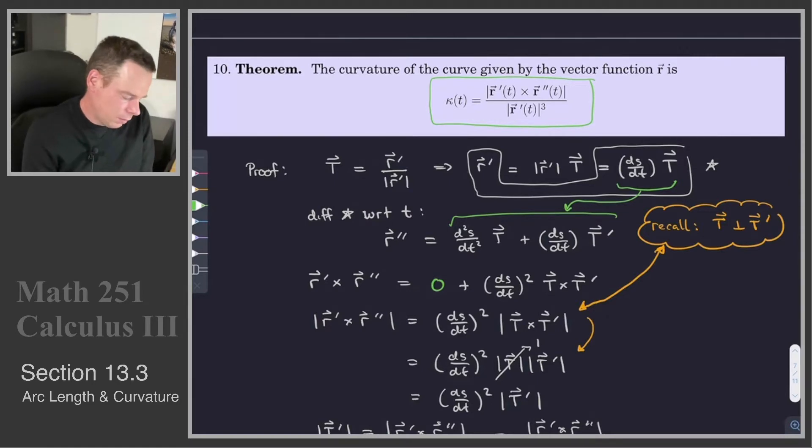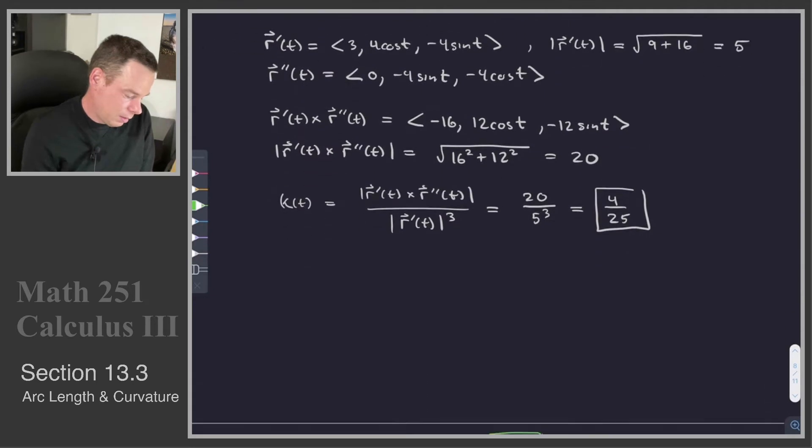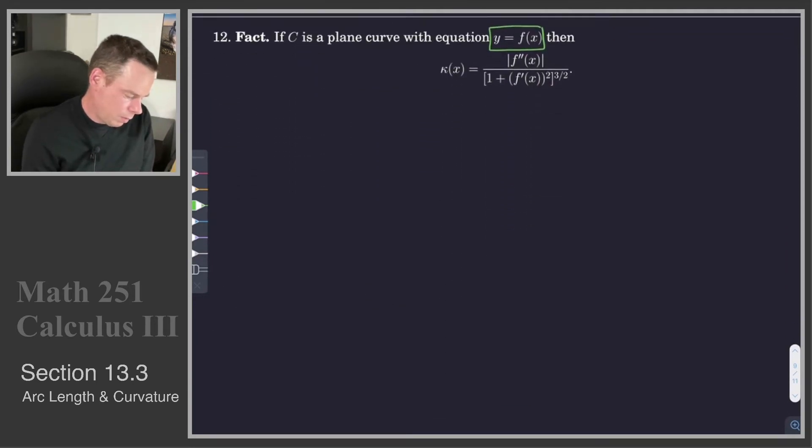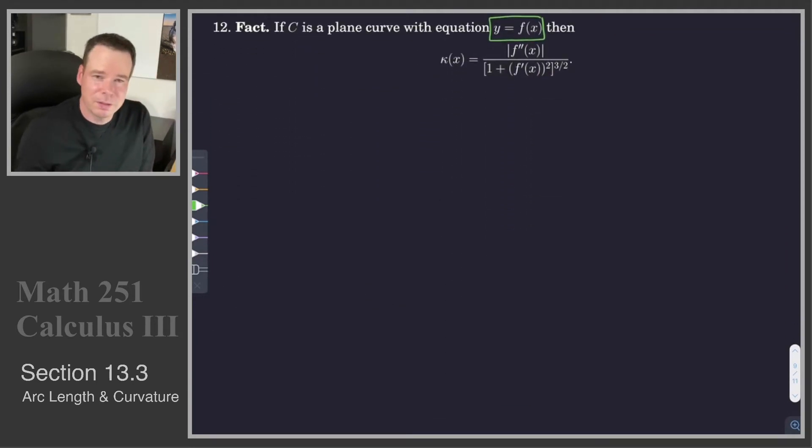Now, you might be thinking at this point, wait a minute, cross products only exist in three dimensions. We're going to be focused on curves in two dimensions. How can we use that result? Well, the idea is we just pad it. We pad the third component by a zero. We think of it as living in three dimensions, but just in the xy plane with no z component. So that's what we're going to do.